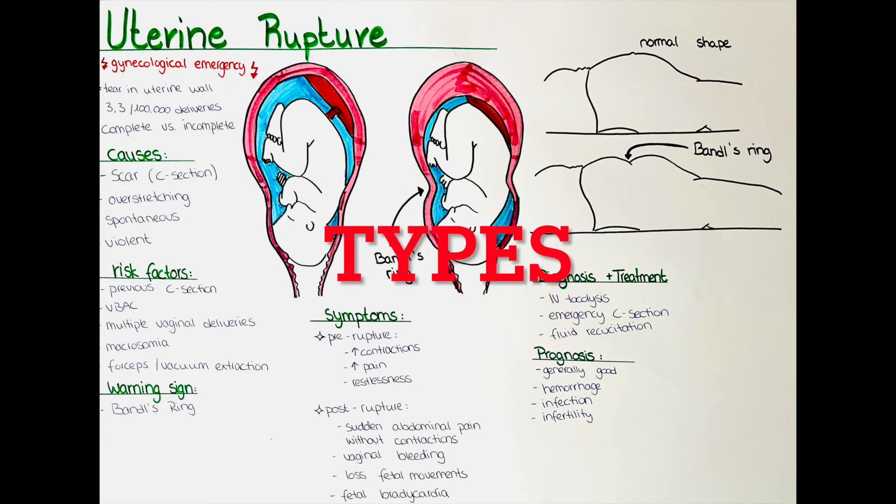What are the histological types of uterine rupture? We differentiate between two types of uterine rupture.